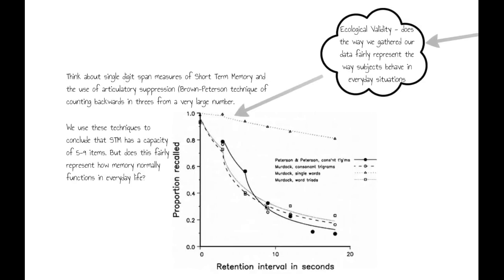Here's my alternative: the single digit span. The Brown-Peterson technique, counting backwards in threes from a very large number as a means of preventing articulation and rehearsal. We use techniques like this to conclude what the capacity of short-term memory is and test recency and primacy effects. But the question you've got to ask is, is it a fair test? Does it really represent how human memory works in everyday life? Do you often find yourself counting backwards in threes from a very large number in order to prevent yourself rehearsing that vital telephone number? And the answer, of course, is no.